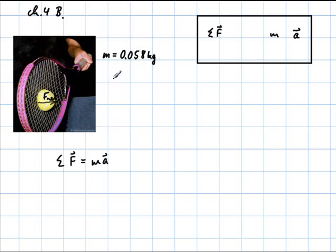Then what else is given is from rest. So the initial velocity is 0 meters per second. And the final velocity is given as 45 meters per second. And the distance is 44 centimeters, so 0.44 meters.